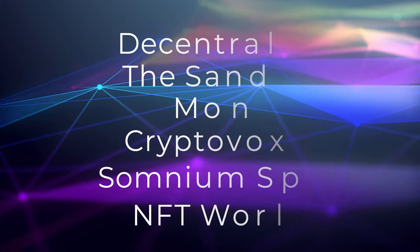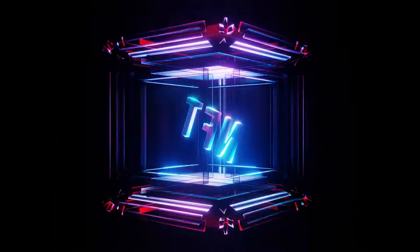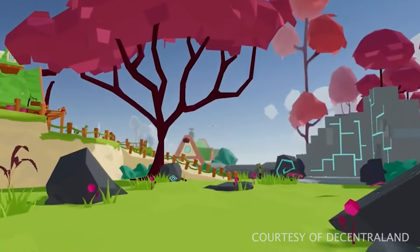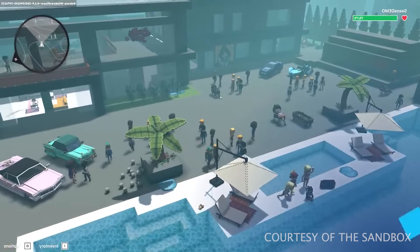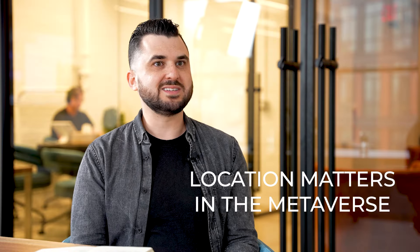Parcel currently supports six virtual worlds, with some of the biggest being Decentraland and the Sandbox. When you buy land on Parcel, after the purchase is complete, an NFT is transferred to your wallet representing a specific parcel of land in one virtual world. The value of land is determined by supply and demand market forces — very similar to the physical world. Land near water, landmarks, a celebrity, or a high-foot-traffic area is more valuable, just like in the physical world. Someone famously paid half a million dollars to buy a parcel next to Snoop Dogg in the Sandbox, proving that location still matters even in the metaverse.